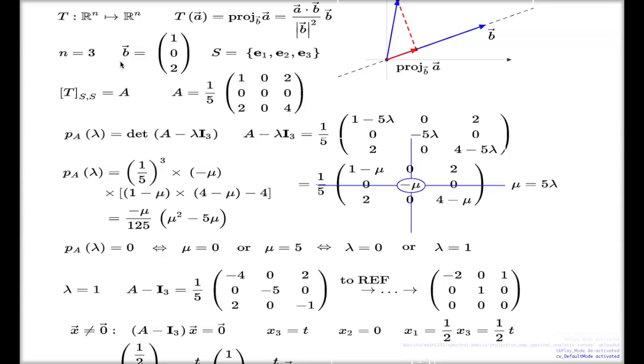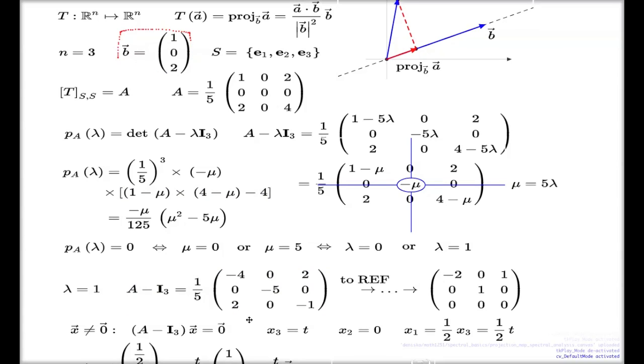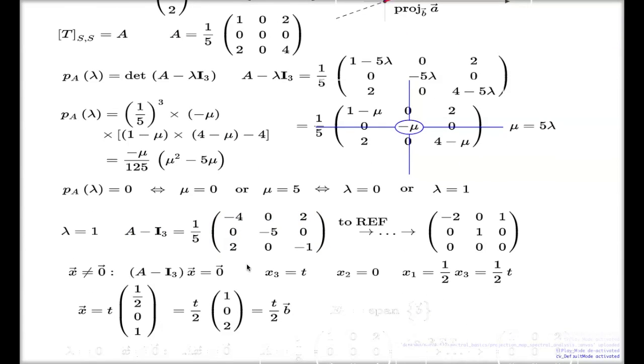And that's the first thing which I'd like to emphasize right now. For the projection map, there will always be an eigenvalue 1, and the eigenvector associated to that eigenvalue will be the vector b at the base of your projection map. So now if I just write up the eigen subspace which corresponds to the value one, it will be just the span of my b-vector.